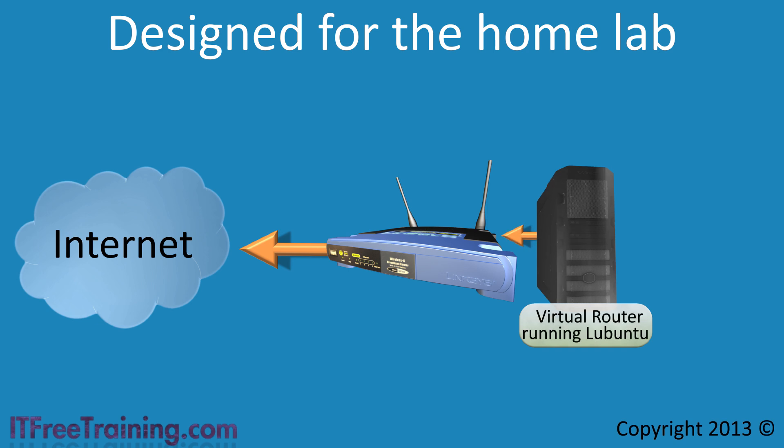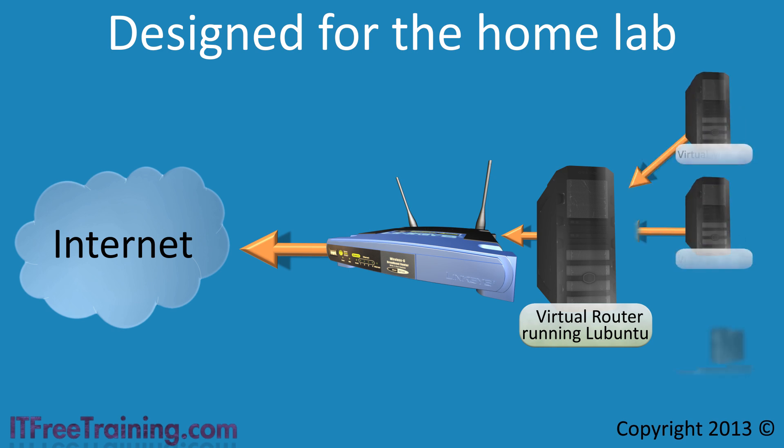What you can then do is create virtual machines that access the home router. Since these virtual machines are on their own networks, you can install services like DHCP without affecting your home network. You can also perform some complex deployments like having virtual machines on different network segments. For example, one virtual machine could be on a virtual New York network and one on a virtual network representing Los Angeles clients.